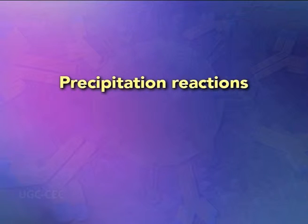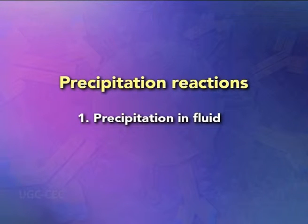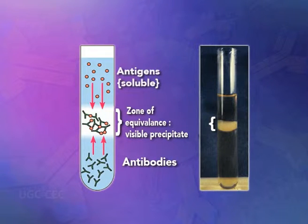A quantitative precipitation reaction can be performed by placing a constant amount of antibody in a series of tubes and adding increasing amounts of antigen to the tubes. After the precipitate forms, each tube is centrifuged to pellet the precipitate. The supernatant is poured off and the amount of precipitate is measured. Plotting the amount of precipitate against increasing antigen concentrations yields a precipitin curve.